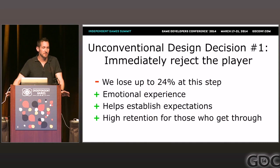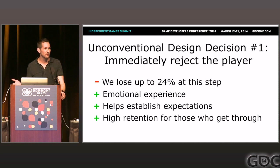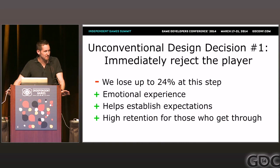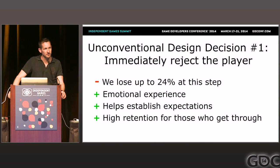It's controversial because we lose about 24% of our players at this stage, and we're working on improving that. No company would ever do this. Part of the reason is that it's really just an email validation system, but going along with our core design value of respecting the player's time, we thought: wouldn't it be cool if the email validation system was part of the story? So we lose some players here, but it helps establish the emotional experience, and it's really powerful. It also establishes the expectation that this is going to be unlike any game you've ever played.